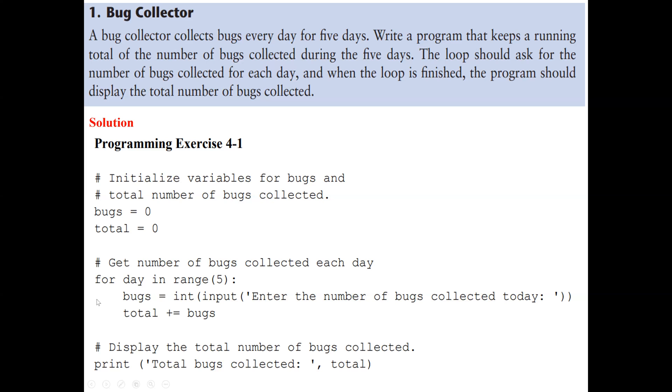So after we get the total, we come out of the loop. Then we display the total number of bugs collected. So here we use the print function, and we say the total bugs collected is the total value in the variable here.